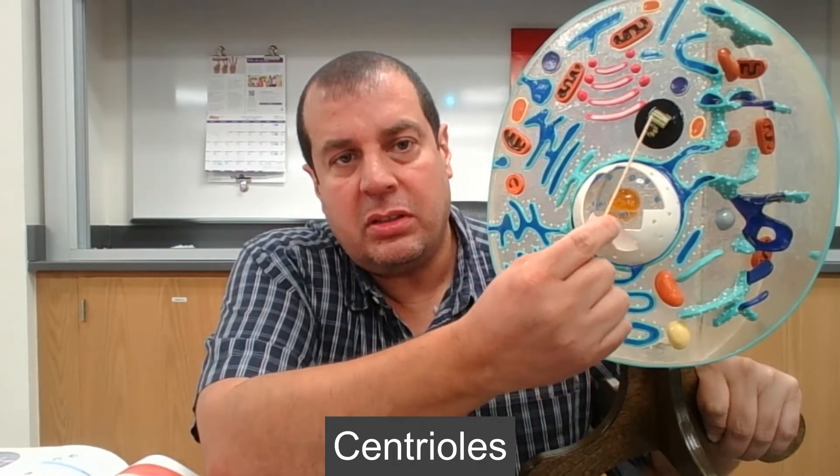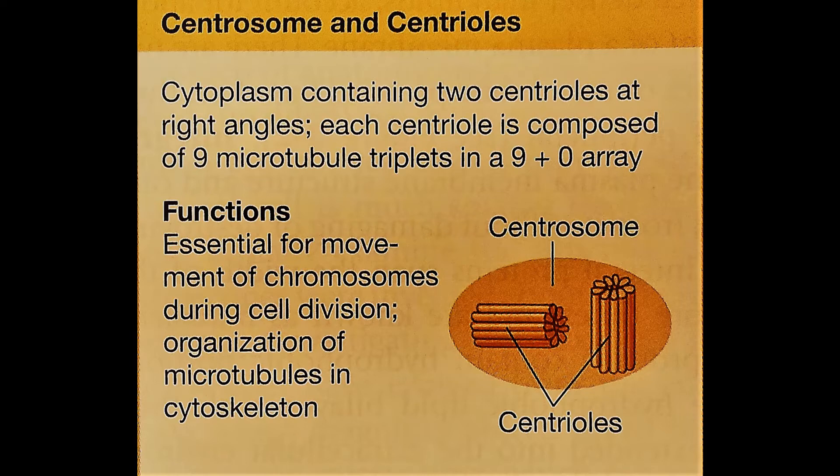Let's start with the central zone of centrioles. These centrioles within the central zone are arranged at right angles, and they are made up of microtubules arranged in a three-by-nine arrangement. These microtubules can radiate outwards and form the cytoskeleton of a cell, which gives the cell its shape and rigidity.